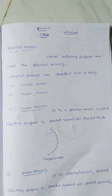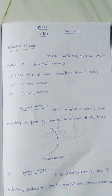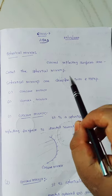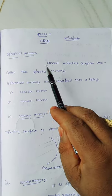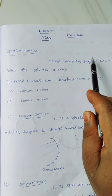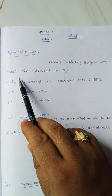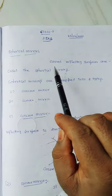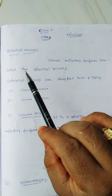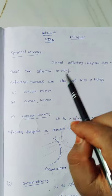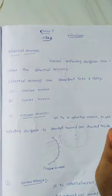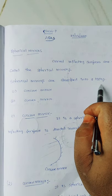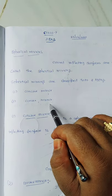Spherical mirrors — we know very well — spherical mirrors are nothing but curved reflecting surfaces. If any curved reflecting surface is there, that should be a spherical mirror. Spherical mirrors are classified into two types: one is concave mirror, another one is convex mirror.